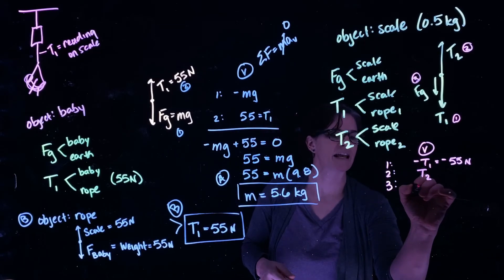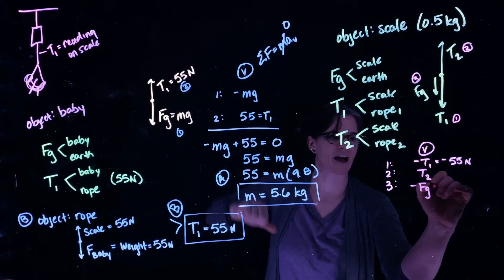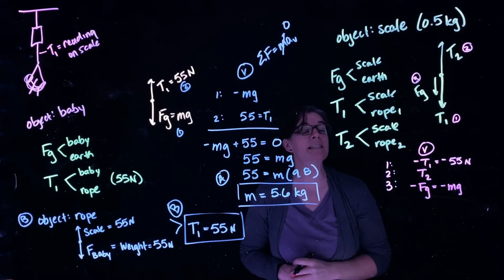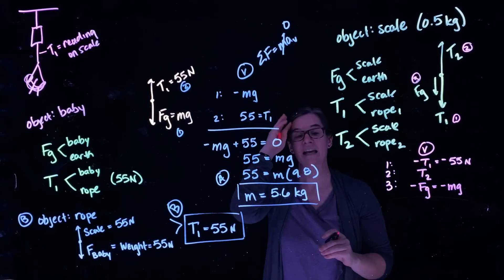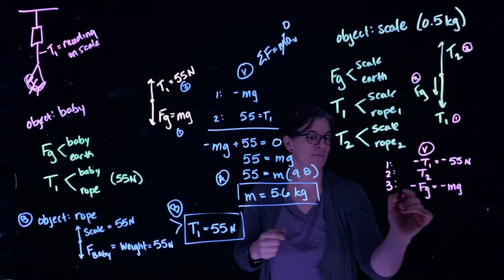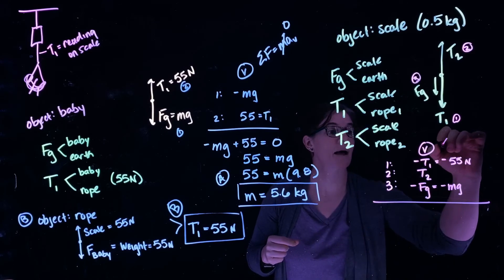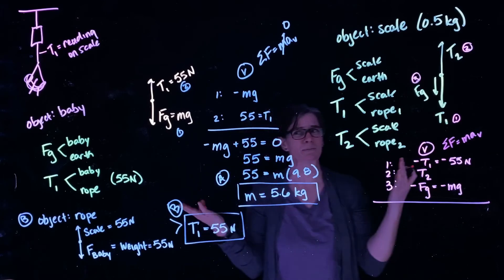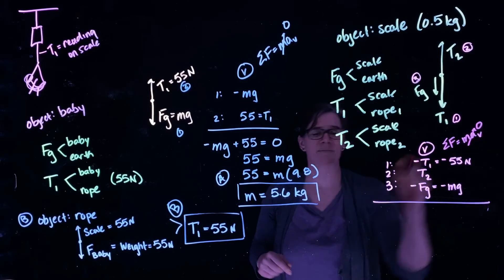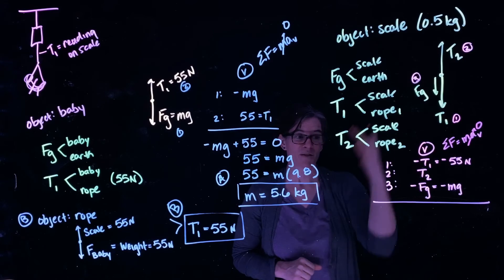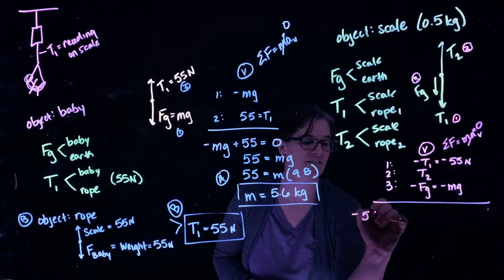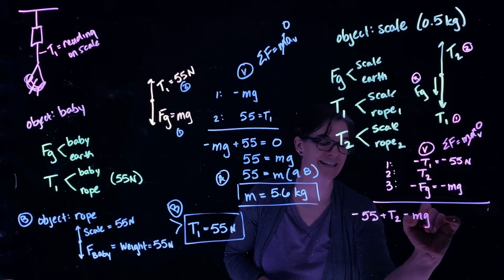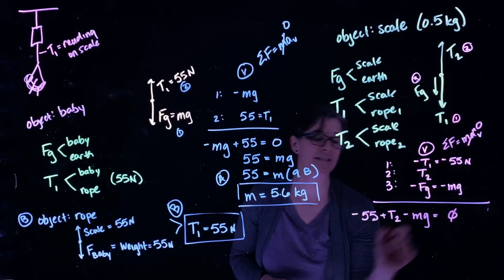Force number three is in the negative direction pointing down, equal to minus mg—in this case, it's the mass of the scale, since that's the object interacting with the Earth. Summing these forces equals mass times acceleration in the vertical direction. This scale is just sitting there, so this sum is zero. Adding them up: minus 55 plus T2 minus mg equals zero.